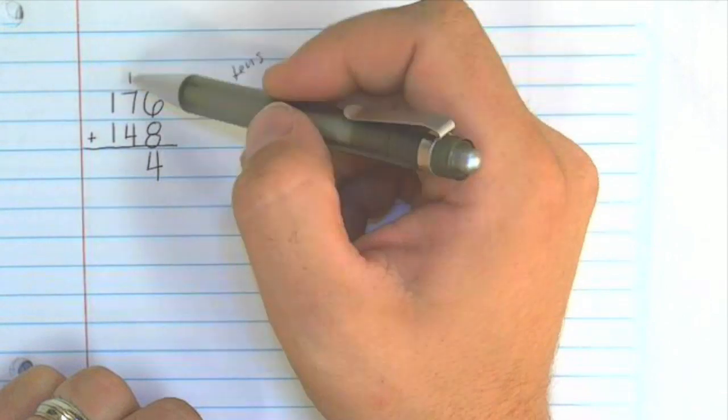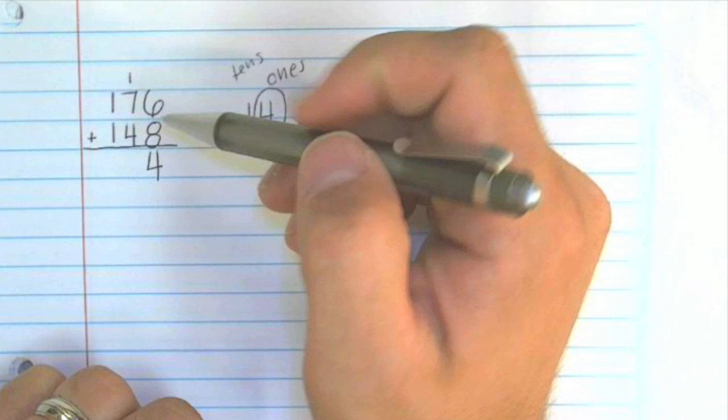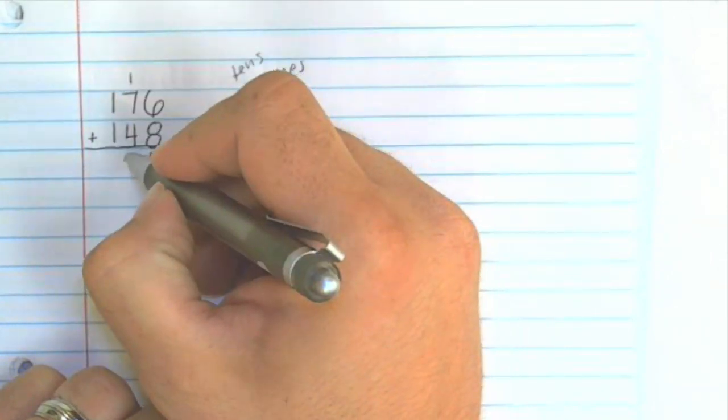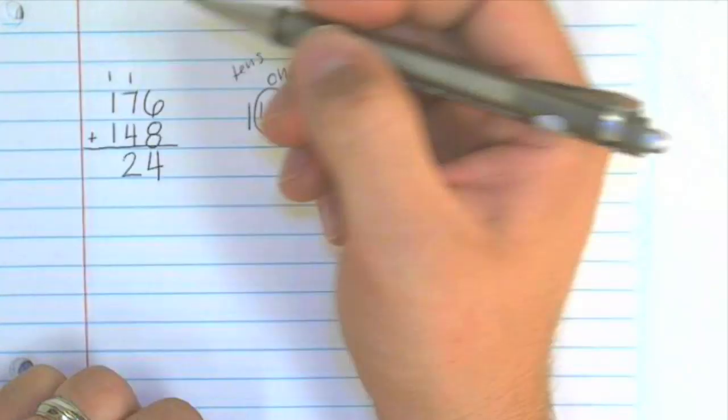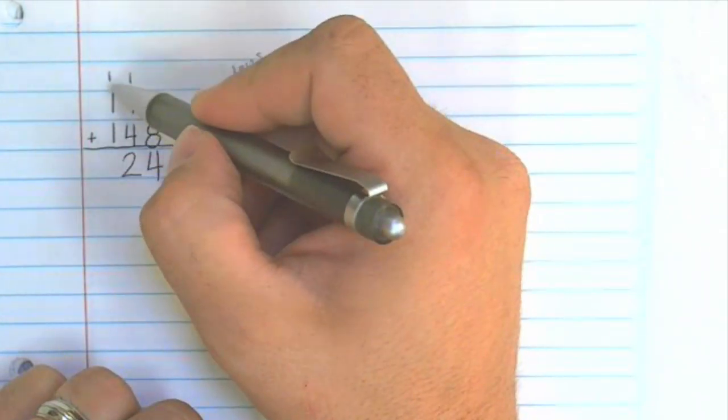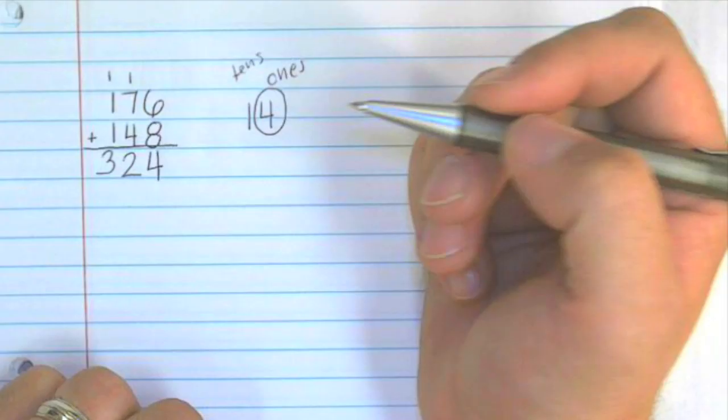Now we add seven plus one is eight and eight plus four is 12. So again we put the two down and we carry the one. And now we have one plus one plus one which is three. 324.